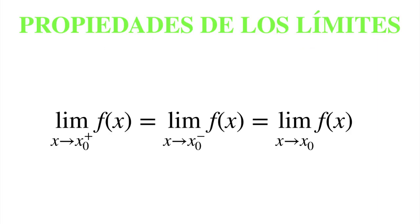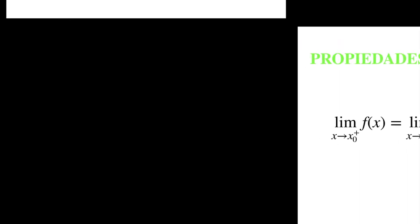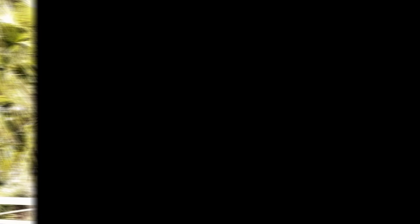Propiedades de los límites. Esta igualdad quiere decir que cuando el límite de f(x) existe cuando nos acercamos a x₀ por la derecha, y es lo mismo que cuando nos acercamos por la izquierda, eso significa que va a haber límite de f(x) cuando x tiende a x₀. Si queréis saber lo que pasa con esta propiedad, os emplazo al próximo vídeo, donde veréis qué ocurre gracias a esta igualdad.